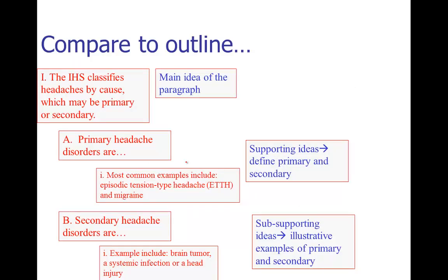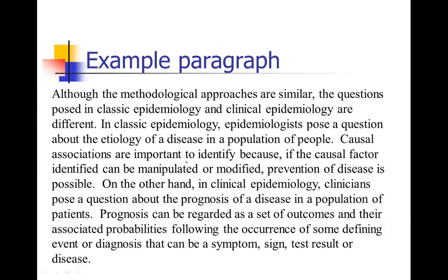That first example was fairly easy because it was just dealing with definitions. This second one is slightly trickier, although still largely definitional. If you want to pause the video and try this one on your own, go for it. This one says: 'Although the methodological approaches are similar, the questions posed in classic epidemiology and clinical epidemiology are different. In classic epidemiology, epidemiologists pose a question about the etiology of a disease in a population of people. Causal associations are important to identify because if the causal factor identified can be manipulated or modified, prevention of disease is possible. On the other hand, in clinical epidemiology, clinicians pose a question about the prognosis of a disease in a population of patients. Prognosis can be regarded as a set of outcomes and their associated probabilities following the occurrence of some defining event or diagnosis that can be a symptom, sign, test result, or disease.' You can hear some of the repetition and awkward phrasing as I read it aloud.